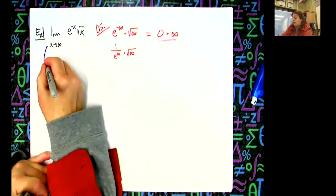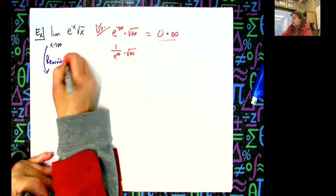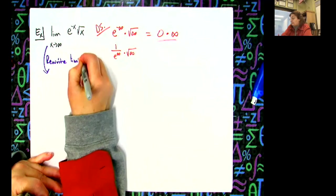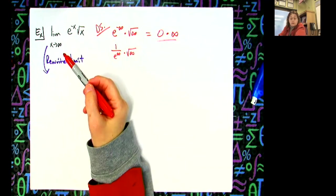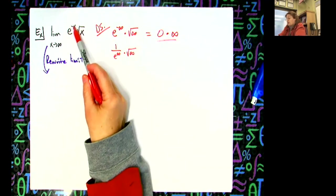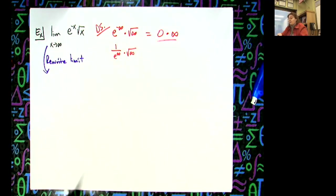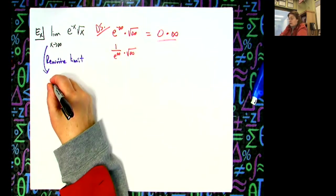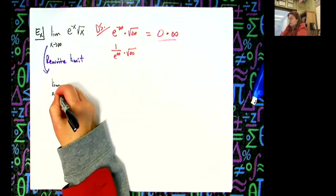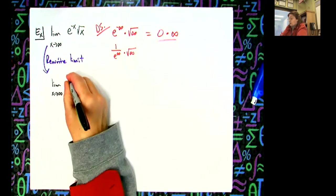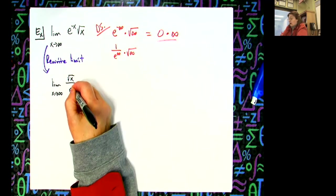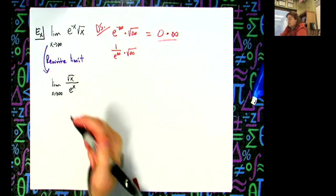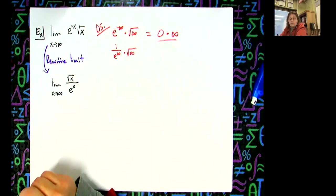We're going to rewrite the limit. Think of your laws of exponents — this right here is e to the negative x. With a negative exponent, I can move it to the bottom. So I'm going to rewrite that problem as the limit as x approaches infinity with the square root of x on top, and move e to the negative x down to the denominator, where it becomes positive. Now I have a rational function.